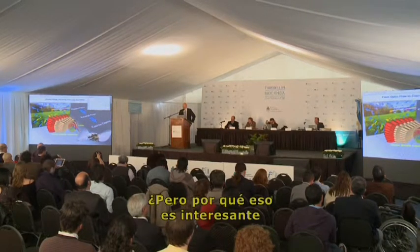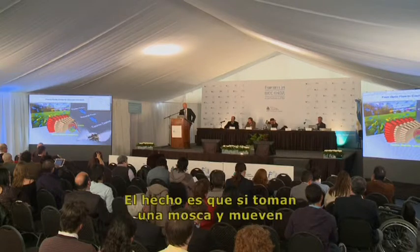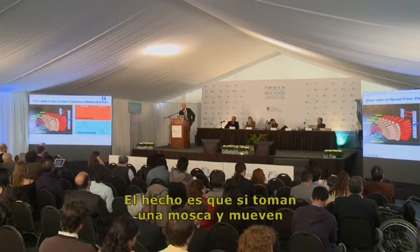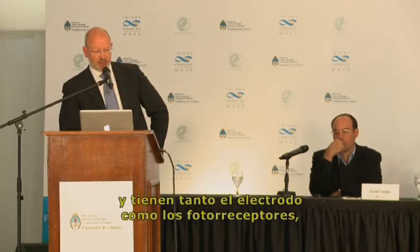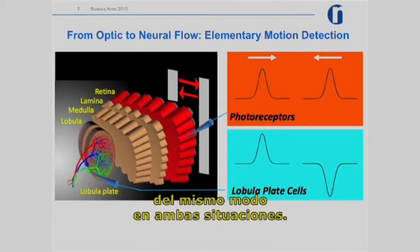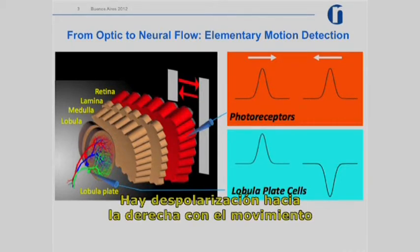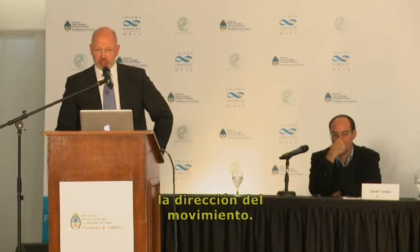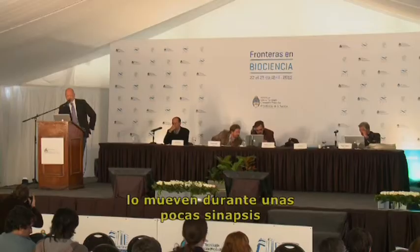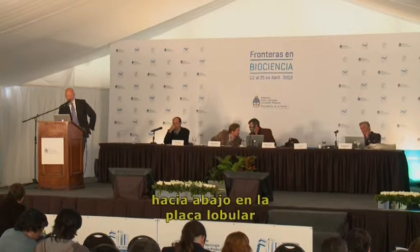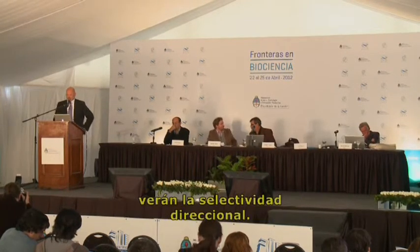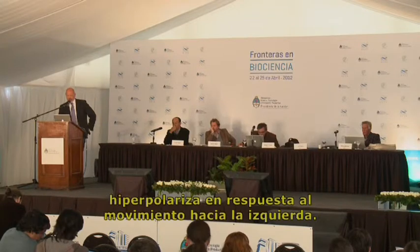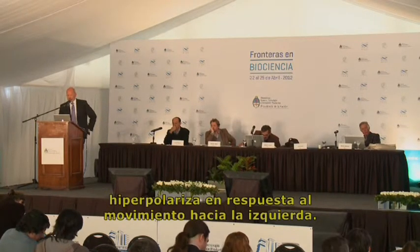But why is this an interesting neural computation? What needs to be computed? If you move a bar in front of a fly to the right and to the left and record from photoreceptors, the photoreceptors respond the same way both times — they depolarize to rightward motion and depolarize to leftward motion. So based on a single photoreceptor, you cannot tell the direction of motion. But if you move your electrode a few synapses downstream into the lobula plate and record from a tangential cell, you see direction selectivity: the neuron depolarizes to rightward motion and hyperpolarizes to leftward motion. So how can that be?